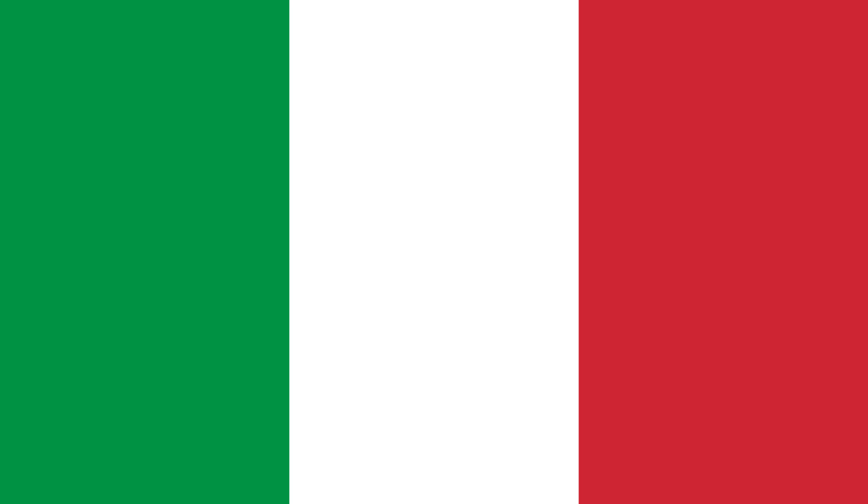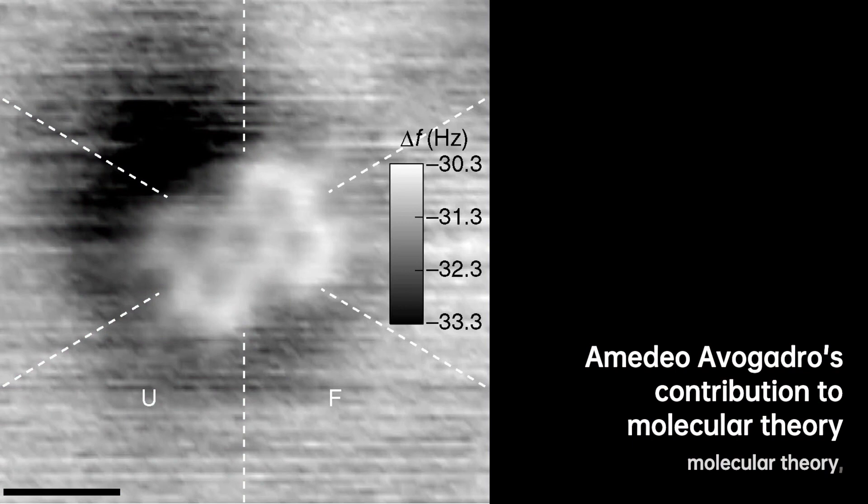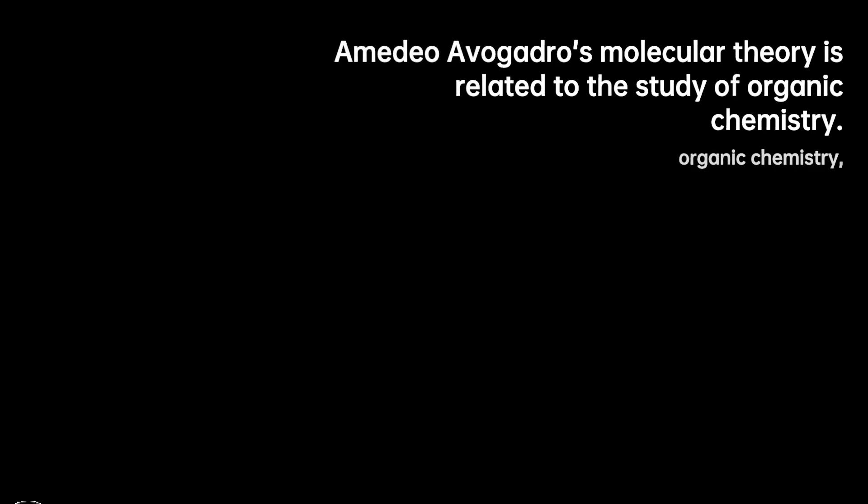It was Johann Joseph Loschmidt who initially calculated the value of the Avogadro constant, which is sometimes referred to as the Loschmidt number in German-speaking countries.